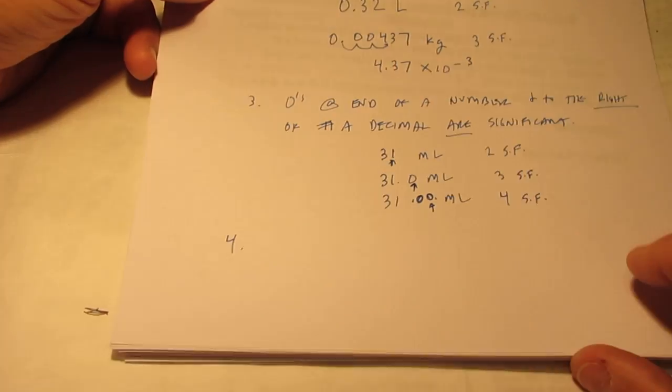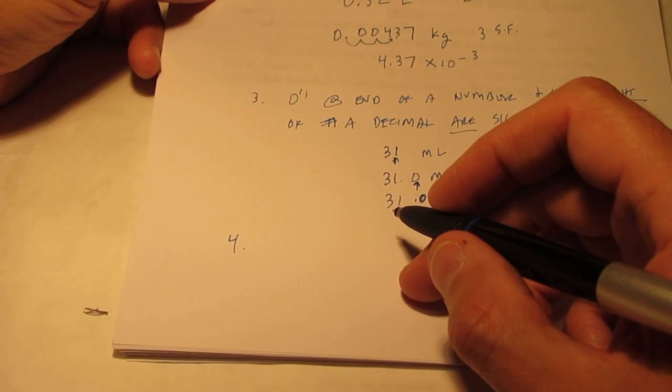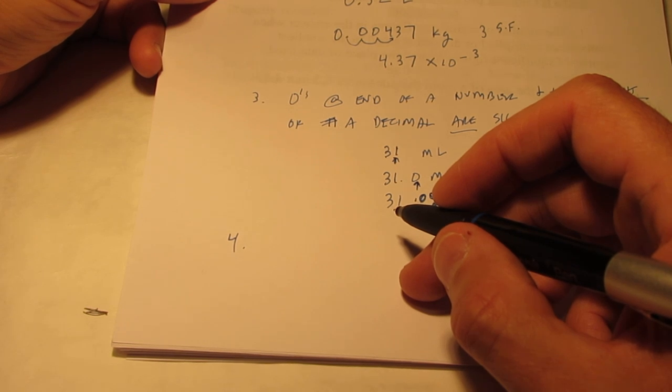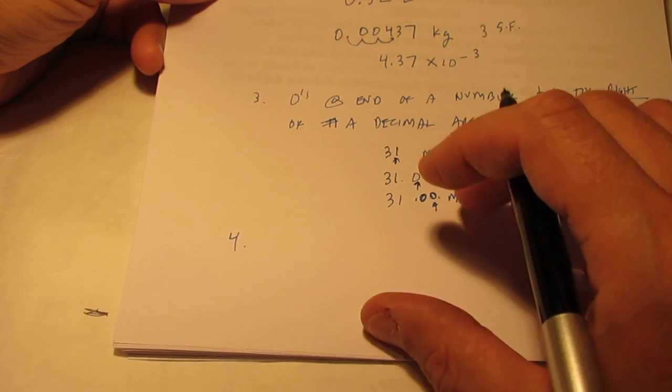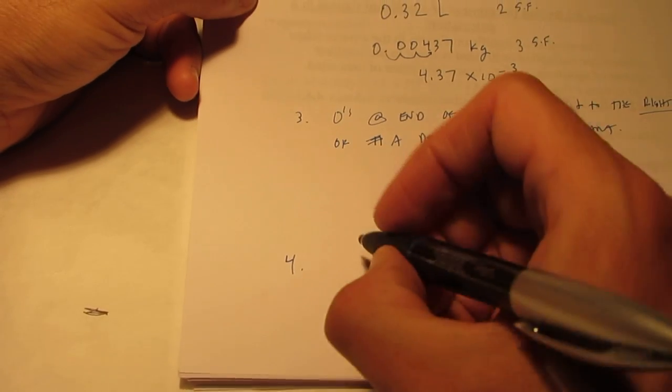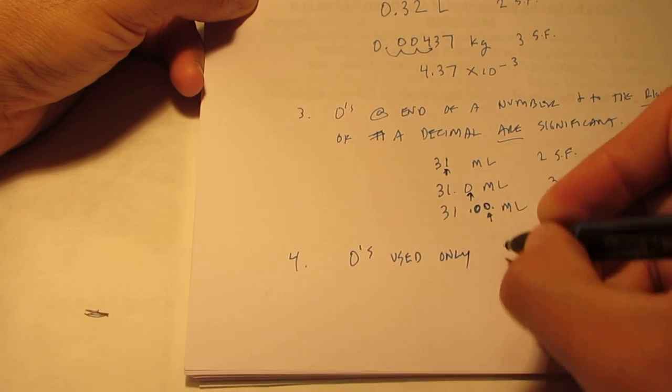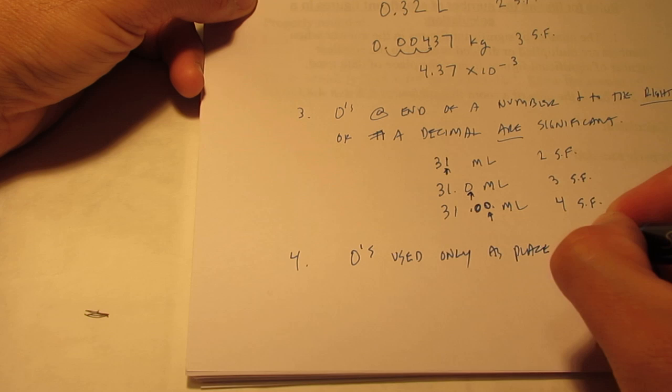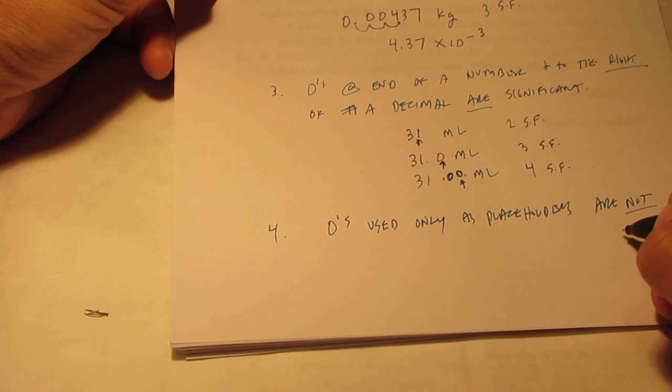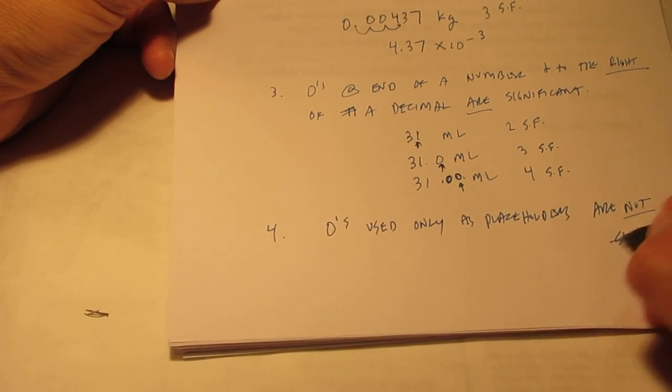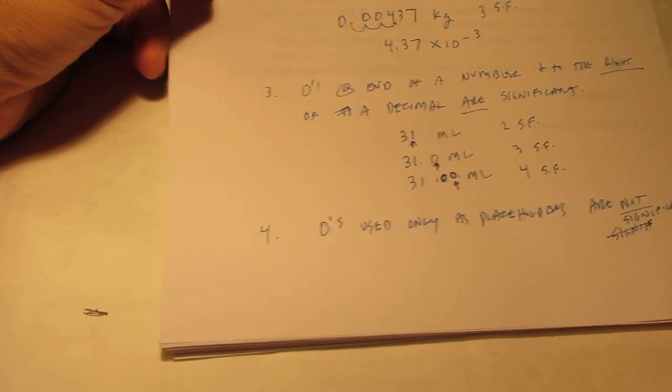Alright, and then finally, the last rule. Zeros at the end of a number, but to the left of the decimal may or may not be significant. If a zero has not been measured or estimated, but is just a placeholder, it is not significant. A decimal point placed after zeros indicates that they are significant. I'm going to shorten that up. Zeros used only as placeholders are not significant.